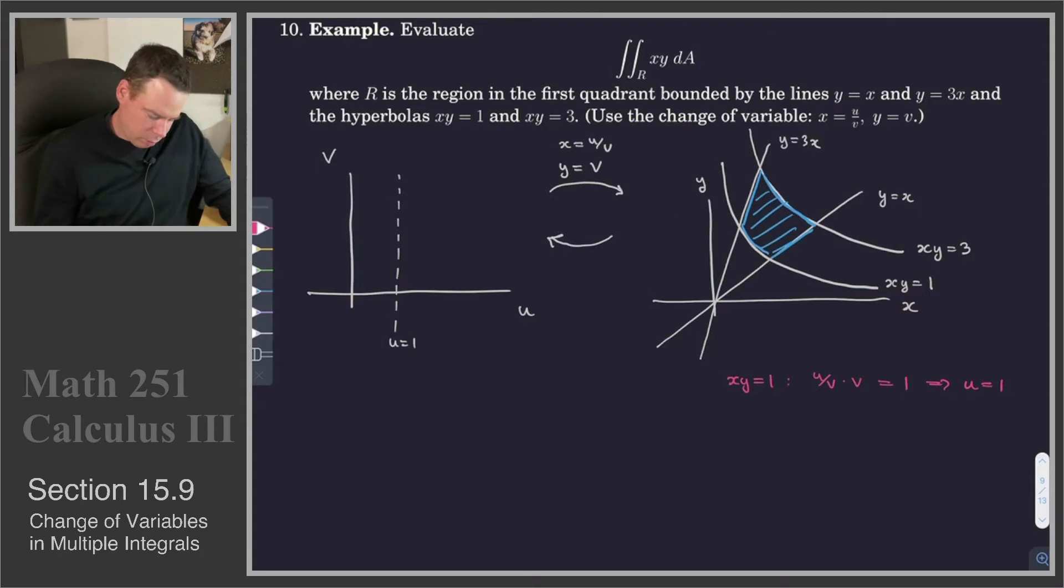And what about the other hyperbola? xy equals 3. So, that's u over v times v is equal to 3. Or, in other words, u is equal to 3. Oh, another line. There we go. u is equal to 3.